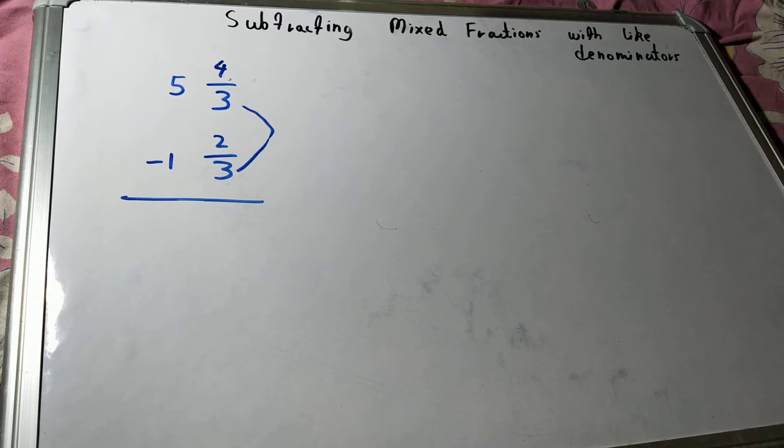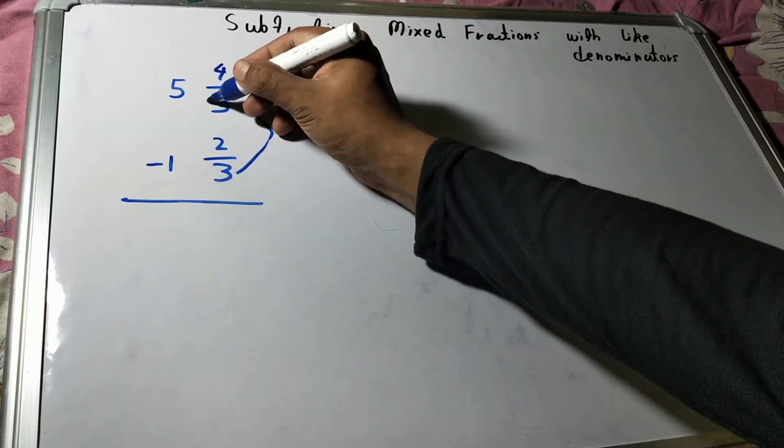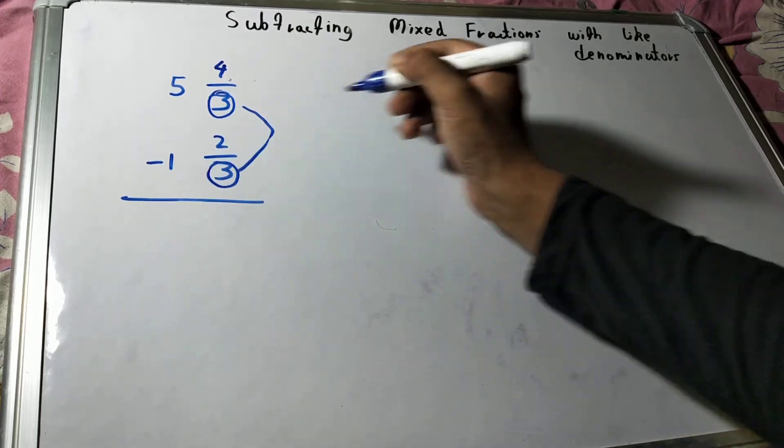Only if the denominators are the same in the mixed fraction can you subtract in this way which I am telling you. So what you need to do is ignore the denominator and write the numbers without it.